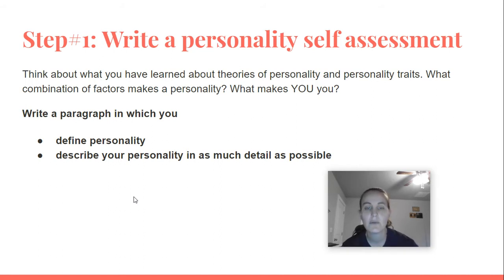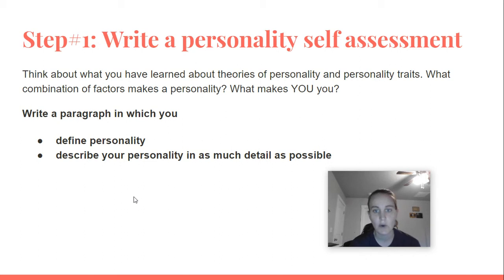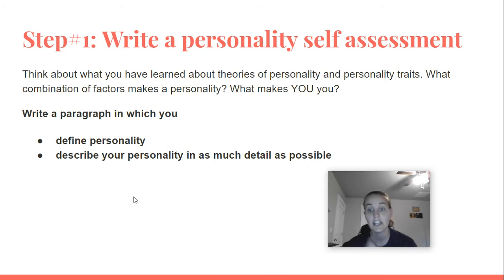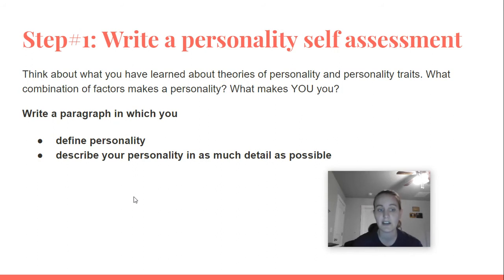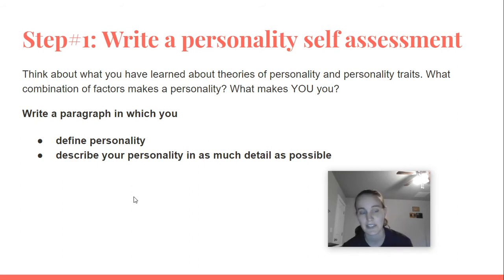Step number one: write a personality self-assessment. Think about what you learned about theories of personality and personality traits. What combination of factors makes a personality? What makes you, you? You're going to write one paragraph — about three to five sentences — in which you first define personality. Look through the readings; the workbook gives you a great definition. Define personality and then describe your personality in as much detail as possible. I want to be able to understand you after you write this paragraph.